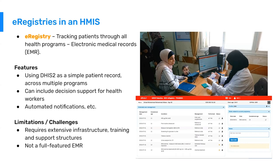Some challenges with e-registries, just like with tracker, are that it requires extensive infrastructure and a lot of training. It is really not a full-blown electronic medical records system. Electronic medical records are usually deployed at hospitals and health facilities with large infrastructure, a lot of connectivity, and users with high computer literacy and digital data entry skills. In many DHIS-2 countries, that's not the case — comprehensive patient records are needed at facilities without good infrastructure or highly digitally literate staff. E-registries provide a pathway to meet that need by capturing data from common registries that are entering patient data anyway, into DHIS-2.